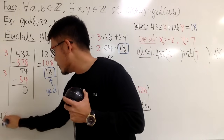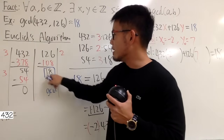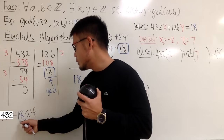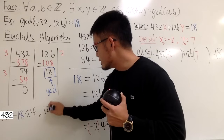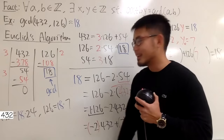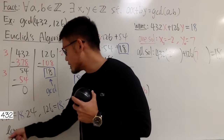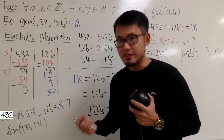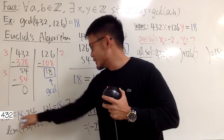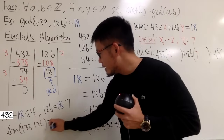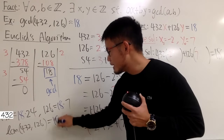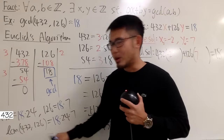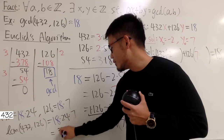Since 24 and 7 are relatively prime — we already pulled all common factors into the 18 — the LCM is just 18 times 24 times 7, which equals 3024. Now, to go from 432 to 3024, since 432 is 18 times 24, I just multiply by 7. And to go from 126 to 3024, since 126 is 18 times 7, I multiply by 24.